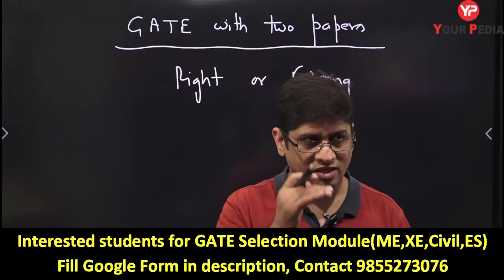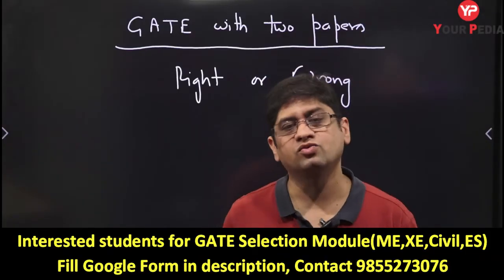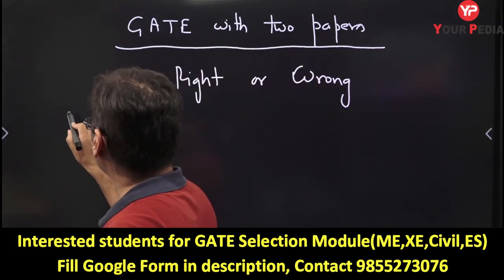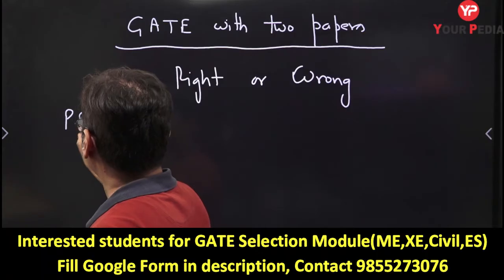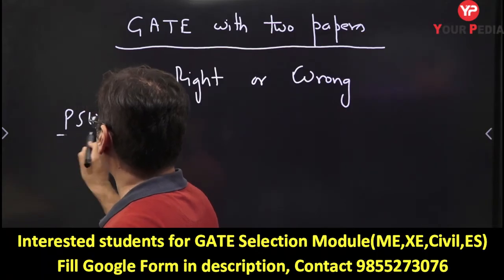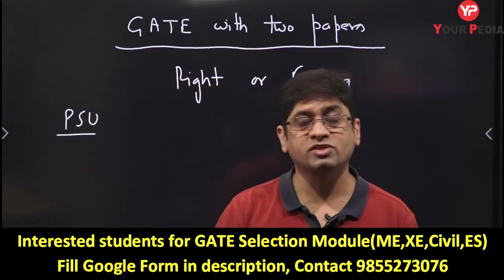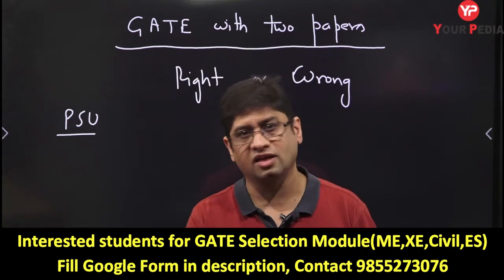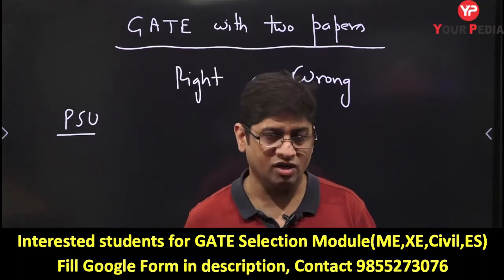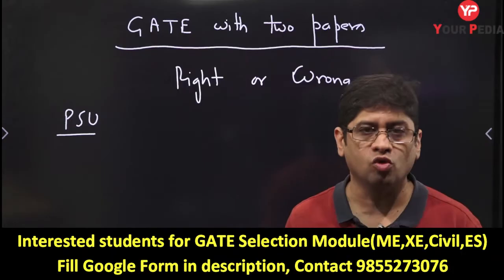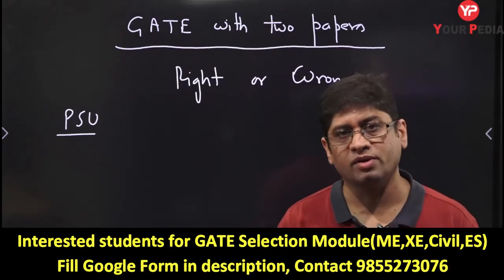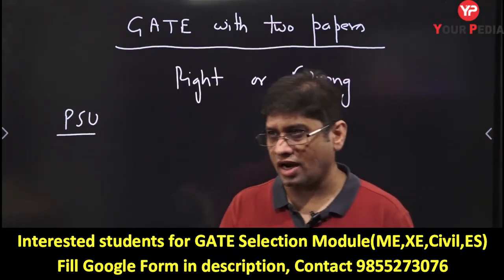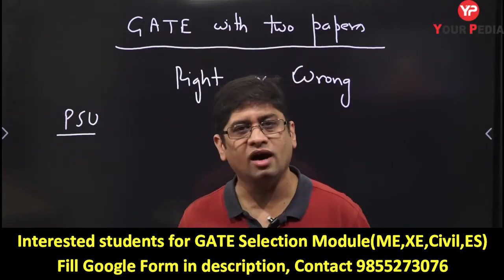If you are targeting public sector jobs, one of the papers you have to write is your core paper — civil engineering, mechanical engineering, electrical engineering. You write one core paper, and the second paper you write because GATE is a three-hour exam.